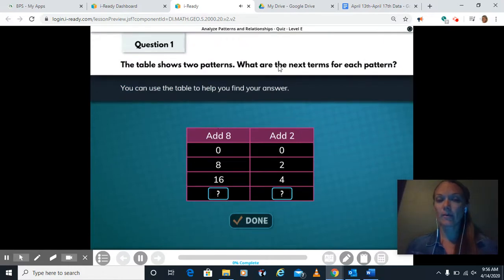So this table shows two patterns. What are the next terms for each pattern? On this side, we're adding eight. So zero plus eight is eight, eight plus eight is sixteen, sixteen plus eight is, you should get twenty-four. On this side, we're adding two. Zero plus two is two, two plus two is four, four plus two is six. You should have twenty-four and six.